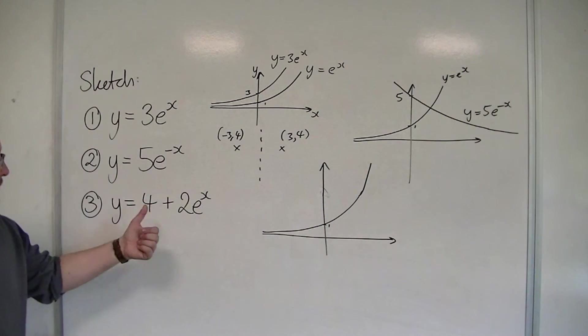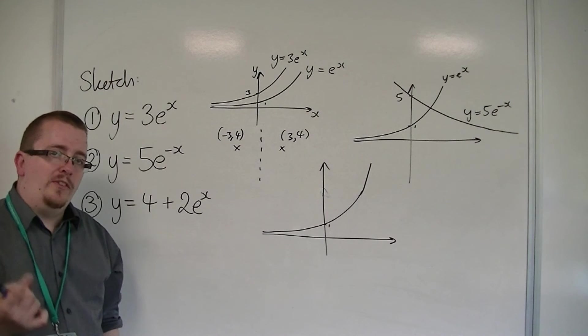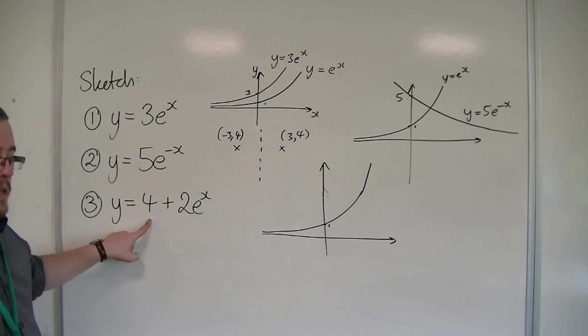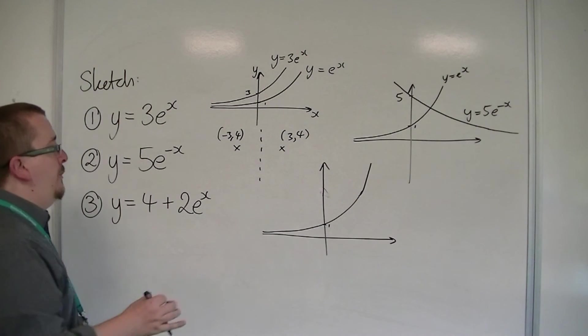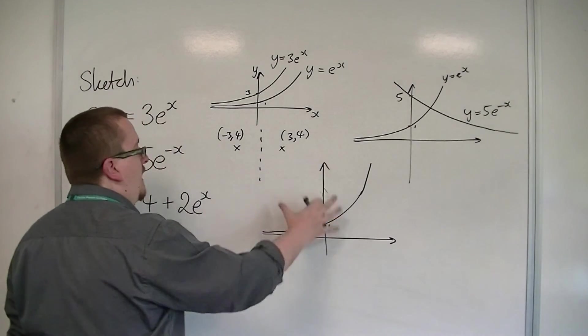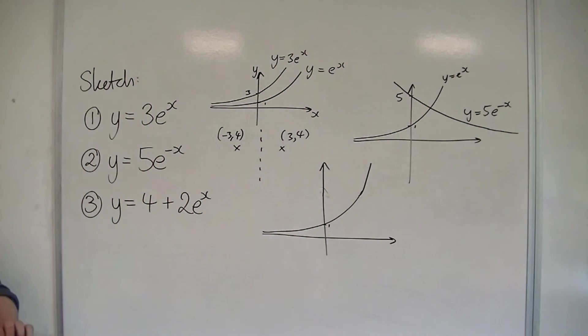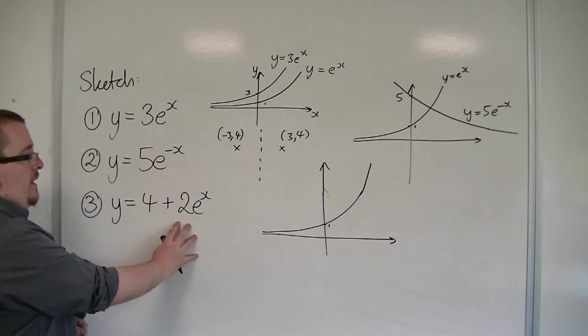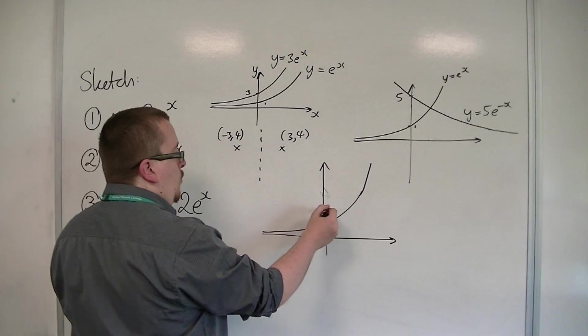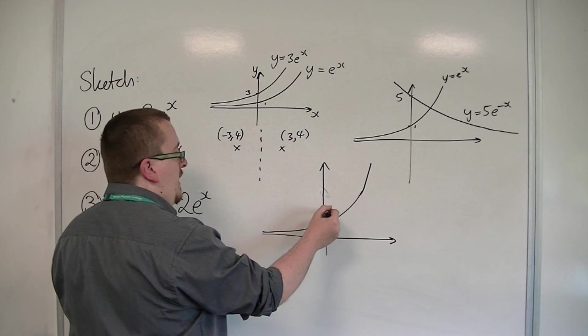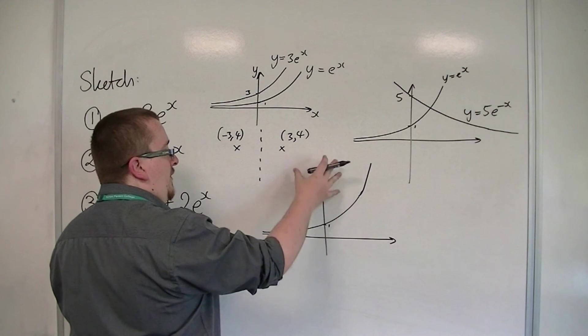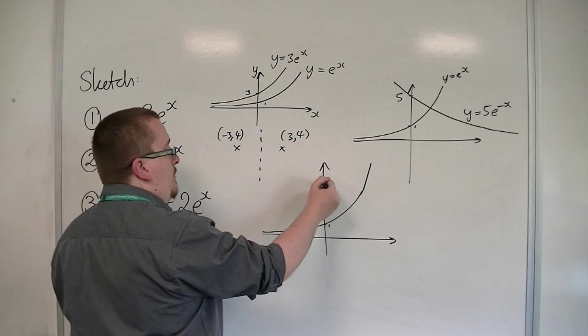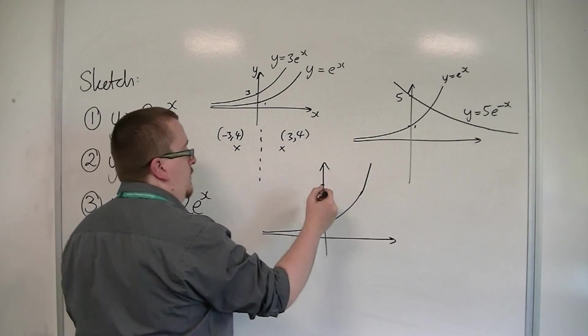The plus 4 is a translation. That's a translation by the vector (0, 4). So it's picking the graph up and moving it 4 units. What we've got here is a curve that was going through 2, has been picked up and moved, translated by 4 in the y-direction, and so will now be going through 6.